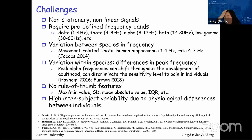Another challenge is that there is no rule-of-thumb metric that people agree is best. Some researchers use statistics like maximum value, standard deviation, IQR on transformed or raw data. Others use spectral power density (SPD). There is no single approach applicable to most cases.